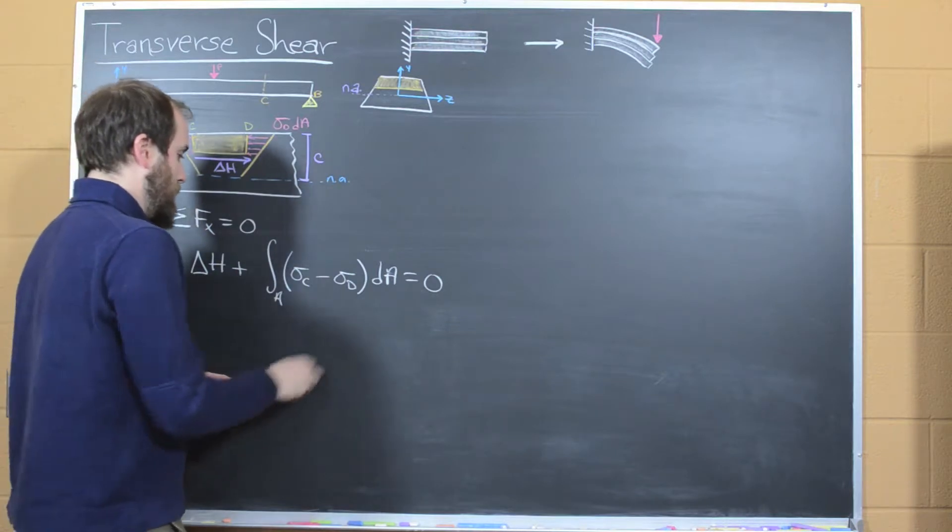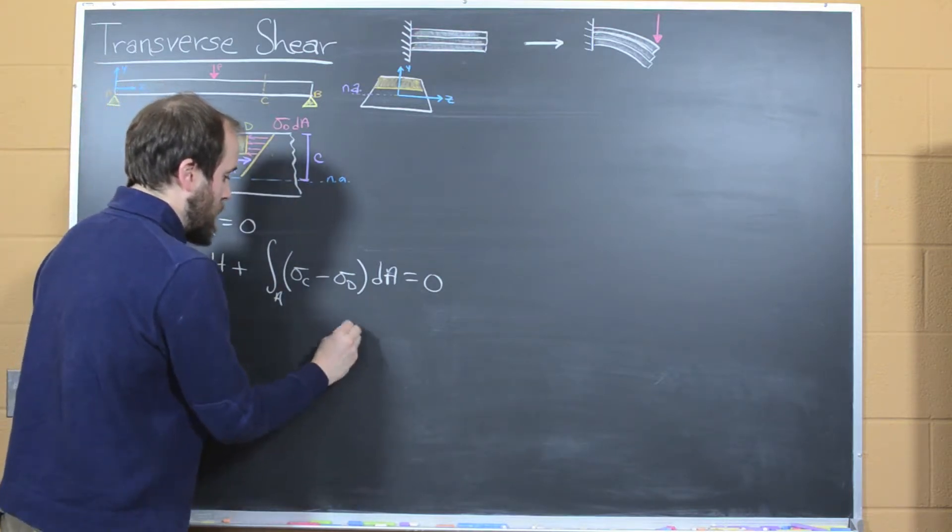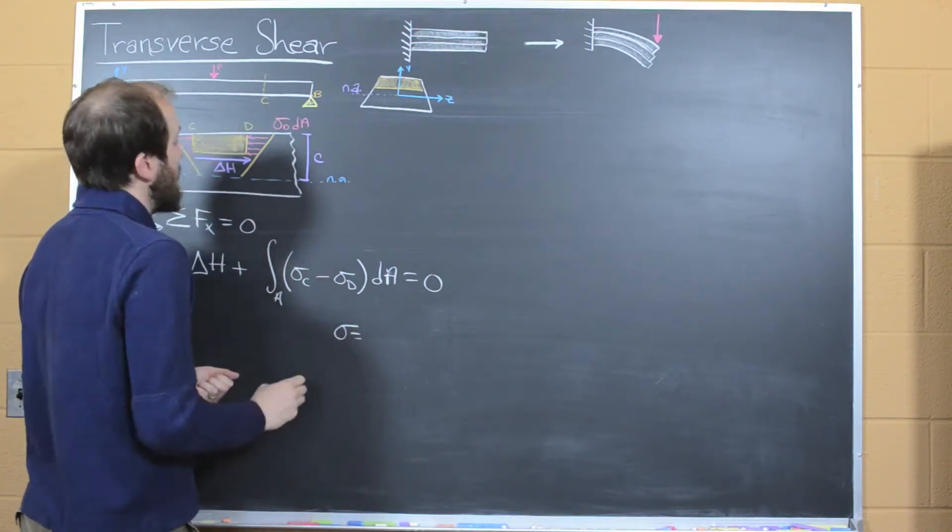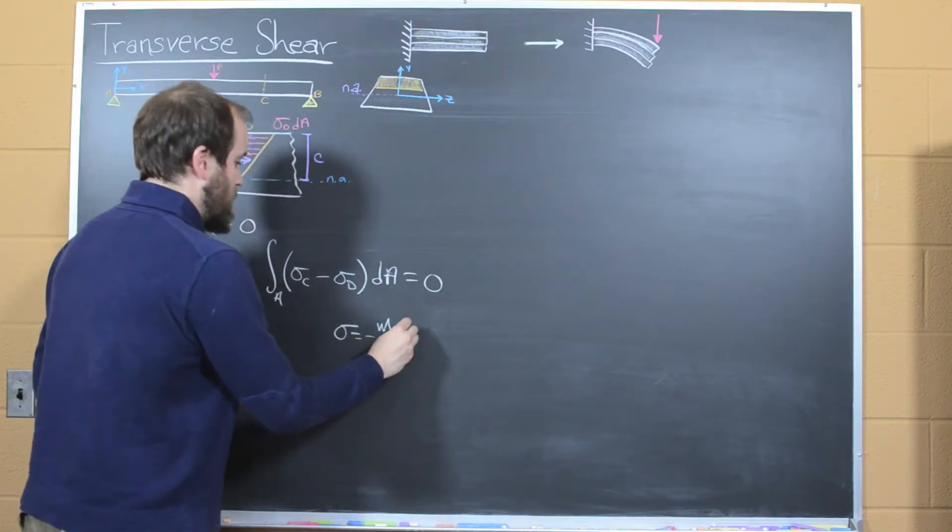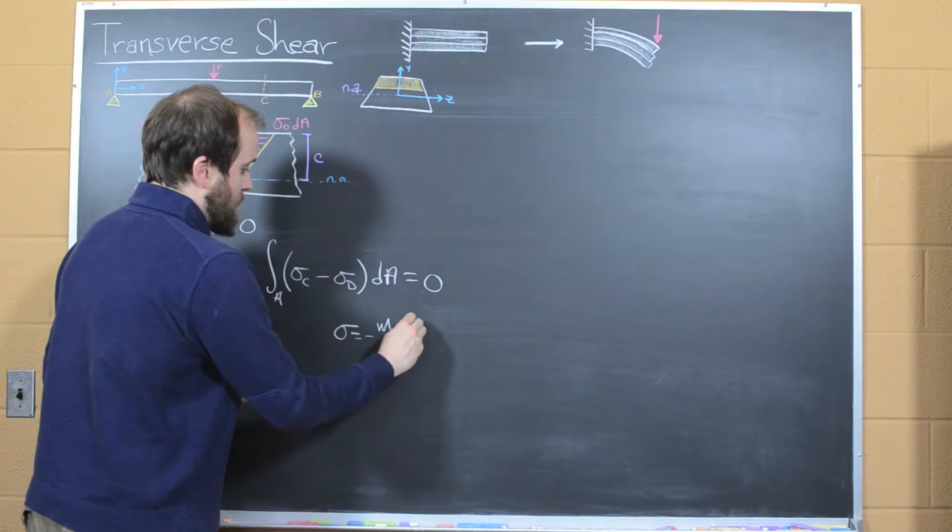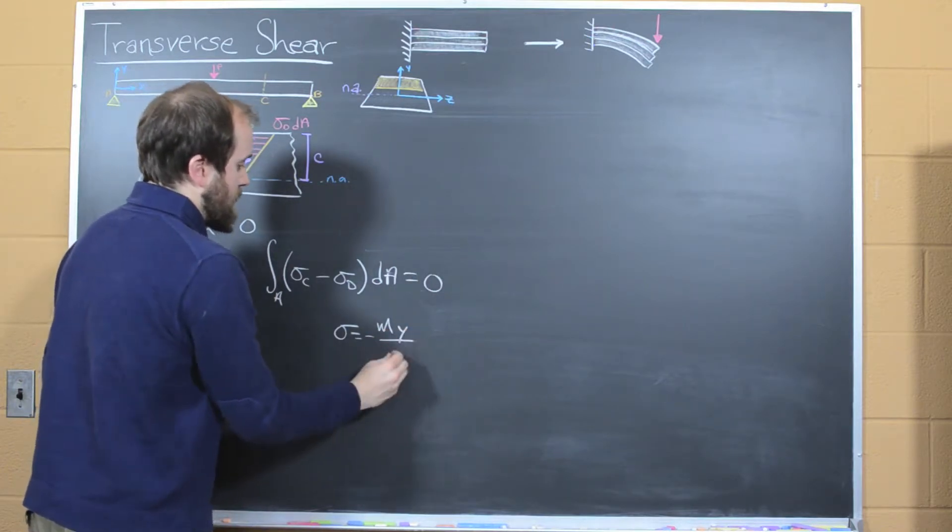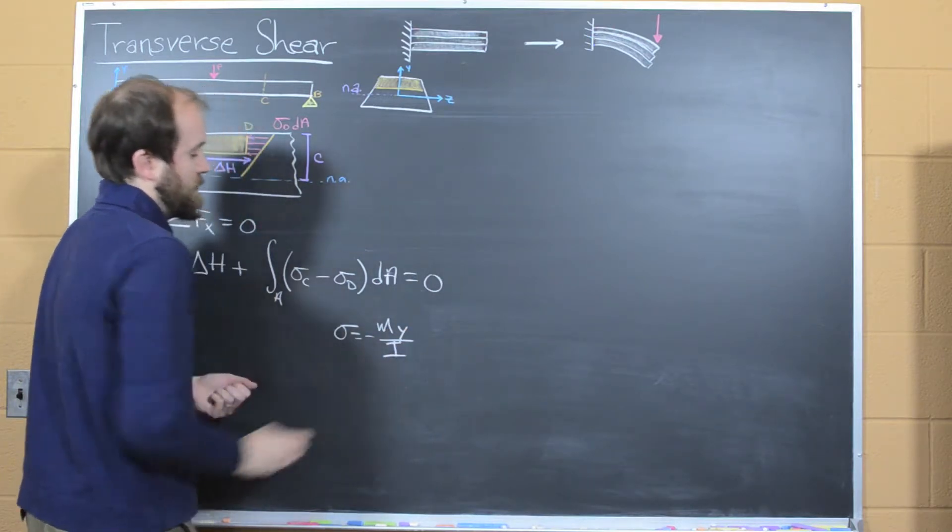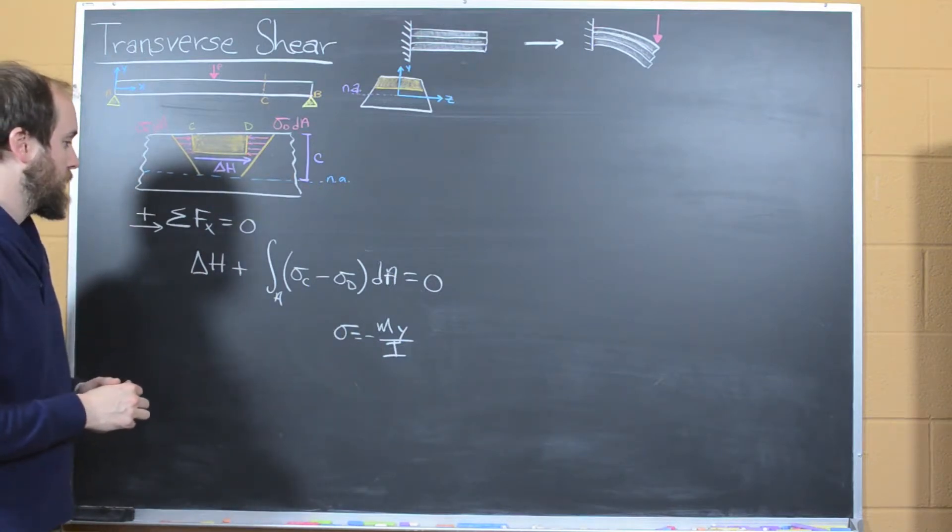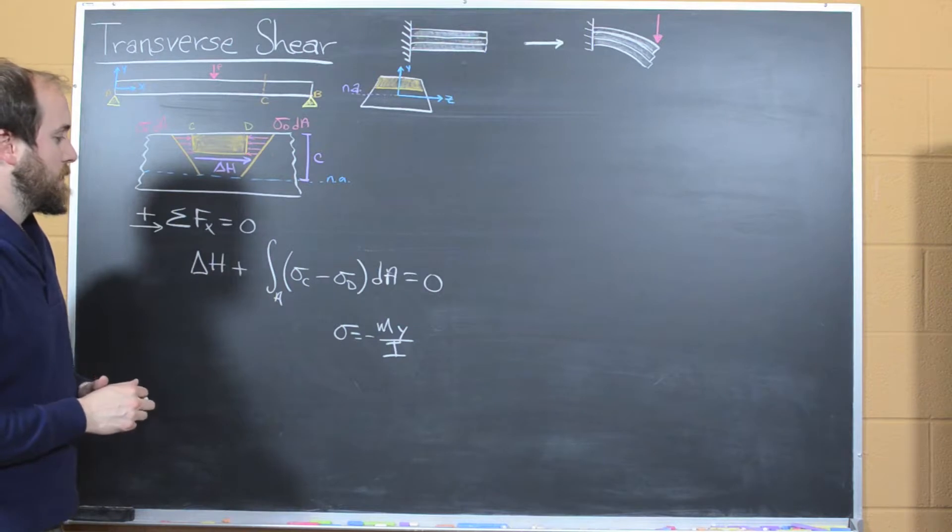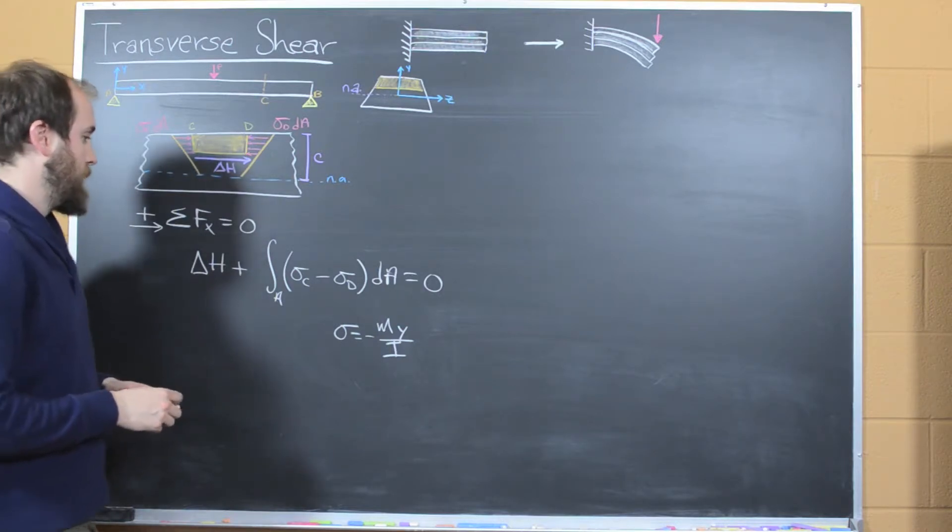And so hopefully you'll recall from last lesson that our normal stress due to bending, which is exactly what we're dealing with, is just simply equal to the moment times the distance away from the neutral axis over your second moment of area. There's a negative sign out front as well.